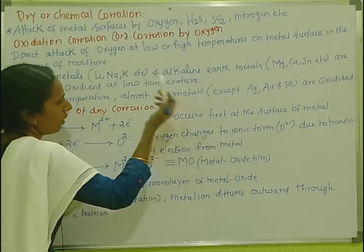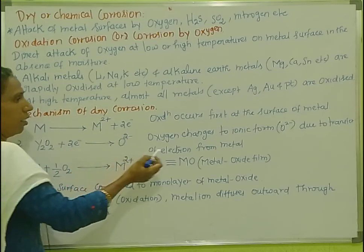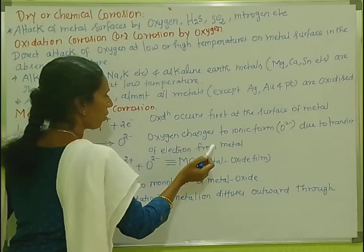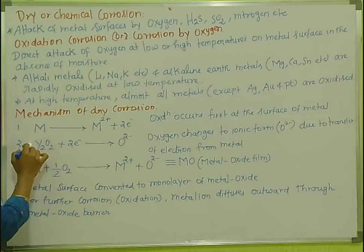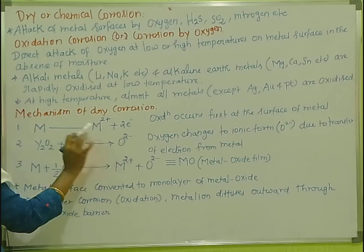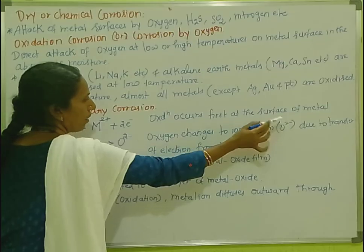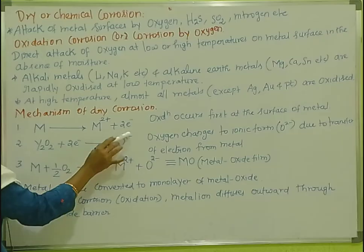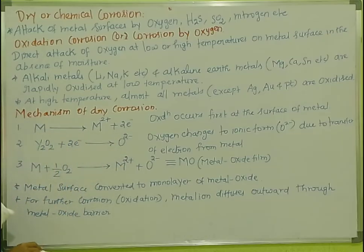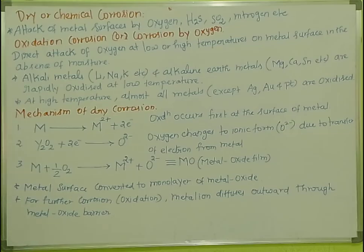Second reaction: oxygen changes to ionic form. Oxygen changes to ionic form — O²⁻ — due to the transfer of electrons from the metal. This is the ionic form of oxygen.